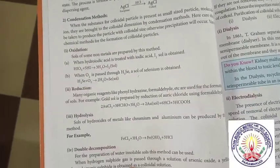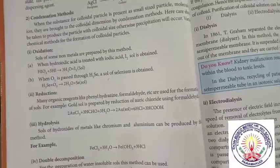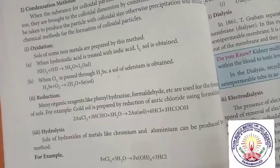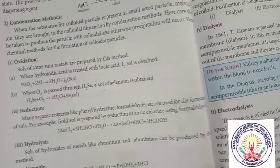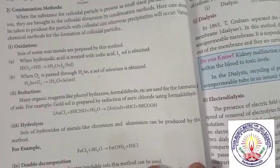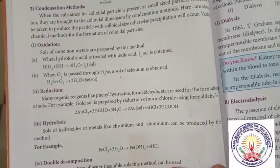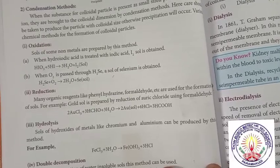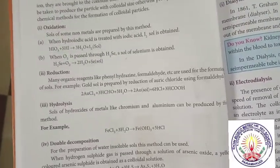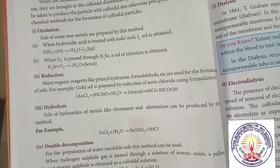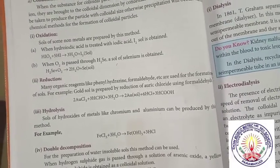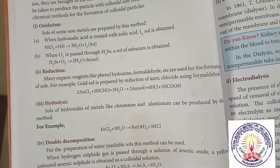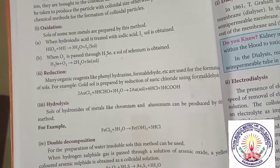Reduction — many organic reagents like phenyl hydrazine, formaldehyde, etc. are useful for the formation of sols. For example, gold sol is prepared by the reduction of auric chloride using formaldehyde. Hydrolysis — sols of hydroxides of metals like chromium and aluminium can be produced by this method. Example: iron trichloride plus 3 H2O gives iron hydroxide plus 3 HCl.